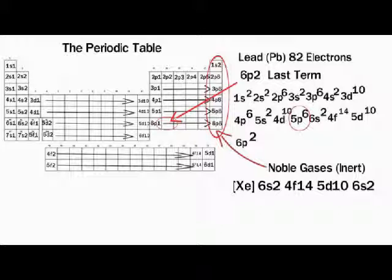We're going to start with the element symbol xenon in brackets, and then we're going to write all the terms that happen after xenon is already filled. So xenon 6s² 4f¹⁴ 5d¹⁰ 6p². I apologize, you read 6p².